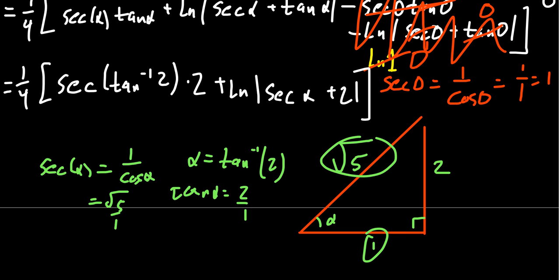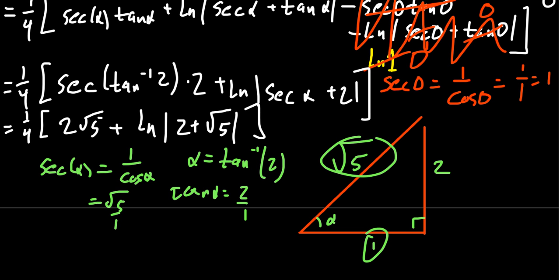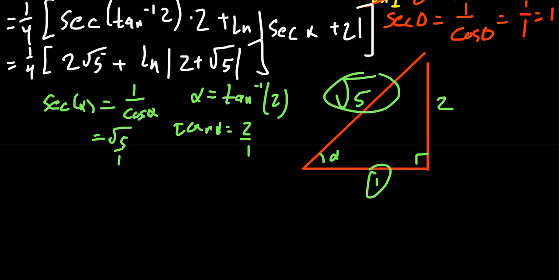We can make that substitution in above. So, we're going to get 1 fourth. Secant of alpha is the square root of 5. You get a 2 there. So, you get 2 root 5. Then, you're going to get the natural log of the absolute value of 2 plus the square root of 5. Now, 2 plus the square root of 5 is already a positive number. You can distribute the 1 fourth through if you so choose. And so, to finish this thing off, we're going to get the square root of 5 over 2 plus 1 fourth the natural log of 2 plus the square root of 5.